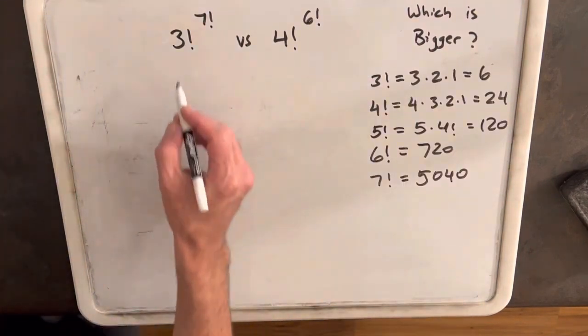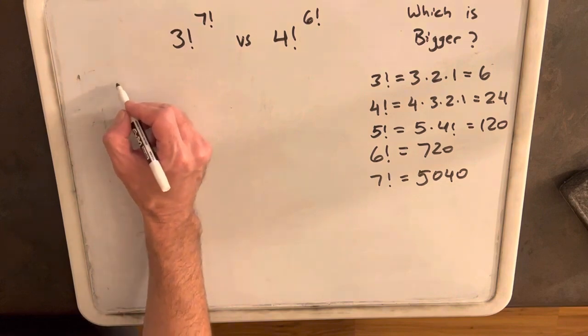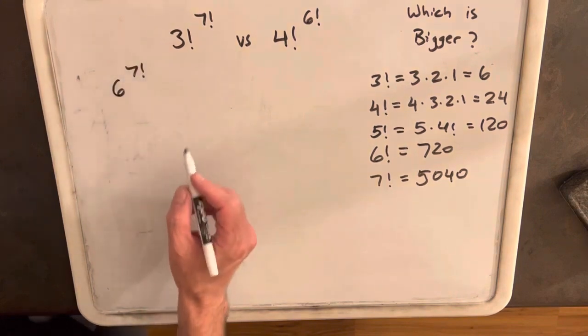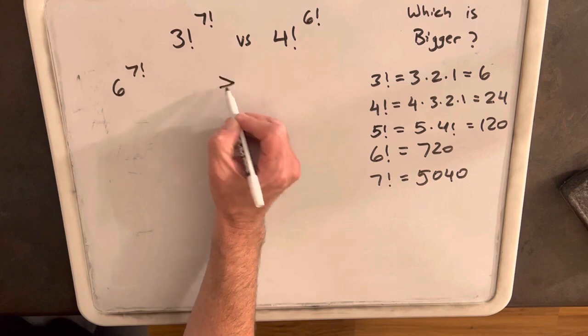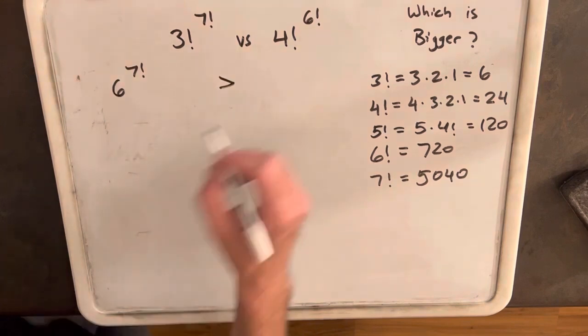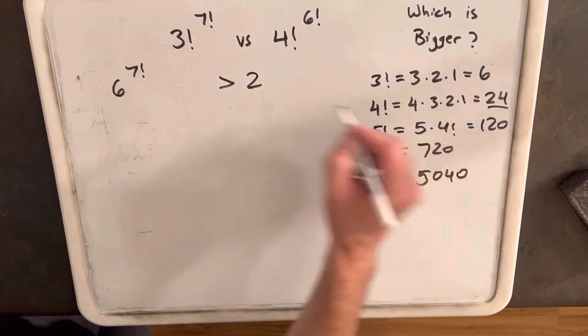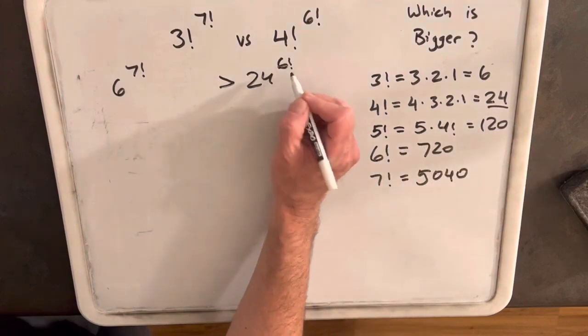We're writing our problem. We have our value for 3 factorial, so that's going to be 6. So we'll have 6 to the 7 factorial. And I'm going to say I think that's going to be greater than 4 factorial, which is 24 to the 6 factorial.